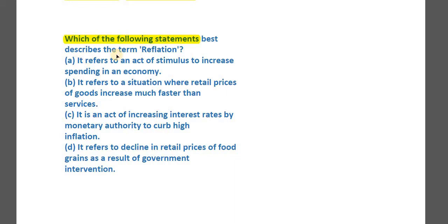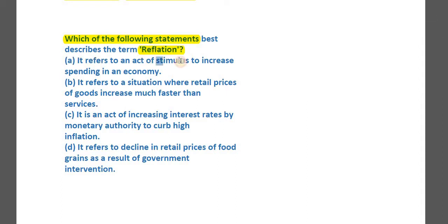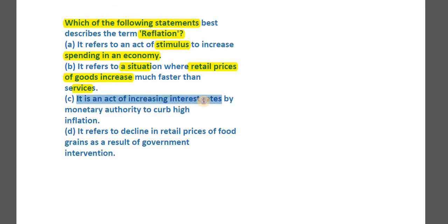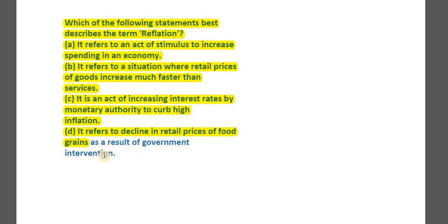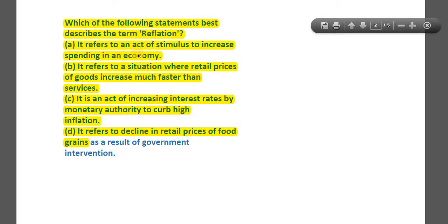Question number three: which of the following best describes the term 'reflation'? Option A: it refers to an act of stimulus to increase spending in an economy. Option B: it refers to a situation where retail prices of goods increase much faster than services. Option C: it is an act of increasing interest rates by monetary authority to curb high inflation. Option D: it refers to a decline in retail prices of food grains as a result of government intervention. Try to come up with the right answer.